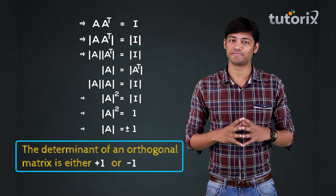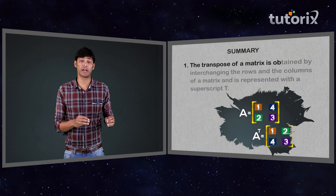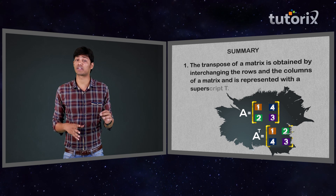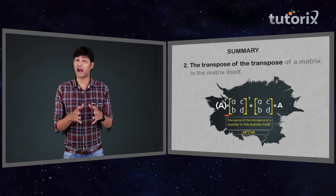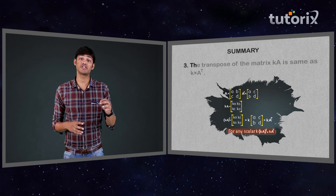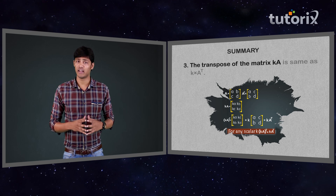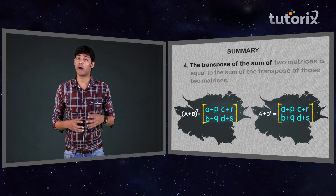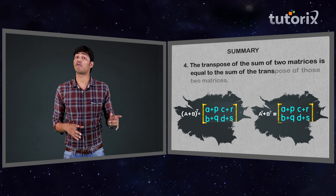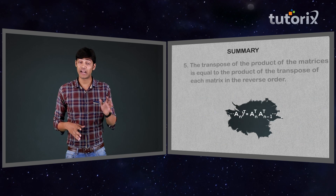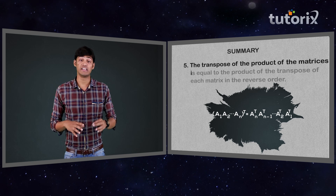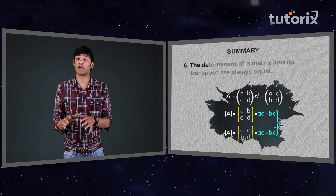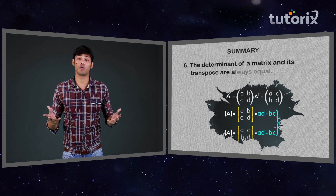The transpose of a matrix is obtained by interchanging the rows and the columns of a matrix and is represented with a superscript T. The transpose of a transpose of a matrix is the matrix itself. The transpose of the matrix K times A is the same as K multiplied by A transpose. The transpose of the sum of two matrices is equal to the sum of the transpose of those two matrices. The transpose of the product of the matrices is equal to the product of the transpose of each matrix in the reverse order.